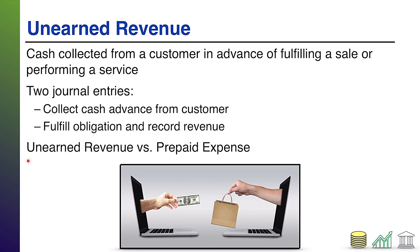A note: unearned revenue versus prepaid expense. These are opposite sides of the same coin. If you receive money in advance for something you haven't done yet, that's a liability called unearned revenue. If you pay money in advance to someone for something you haven't gotten yet, that's an asset called a prepaid expense — usually we replace the word expense with whatever that thing is: prepaid rent, prepaid insurance, prepaid legal services, and so forth. So these are just two sides of the same coin.